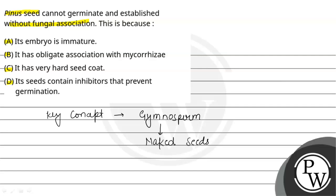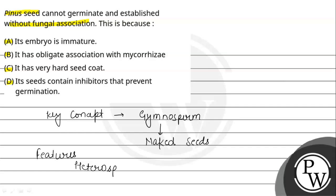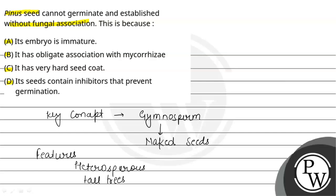Now what are the features of gymnosperms? They are heterosporous, meaning they have archegoniate gametophytes. They have a vascular system with phloem. In Canada they can be tall trees, shrubs, medium-sized trees.